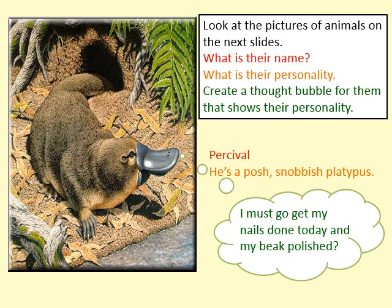So with that in mind we're going to look at pictures of animals on the next slide, and I want you to think: what name could you give them, what is their personality, and I want you to create a thought bubble for them that shows their personality. Pick three of them. Here's Percival — he's a platypus, he's posh and snobbish: 'I must get my nails done today and my beak polished.' So you've immediately created a character — Percival the posh platypus — it's even alliterative.